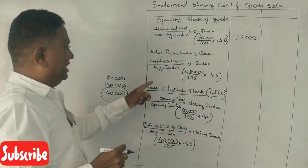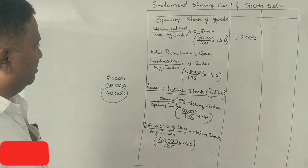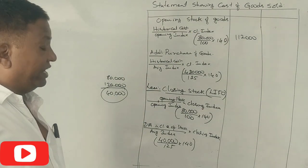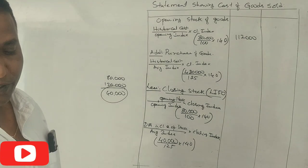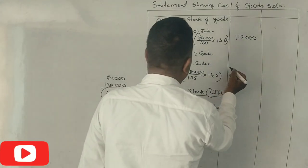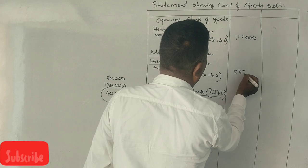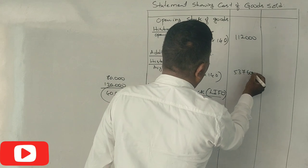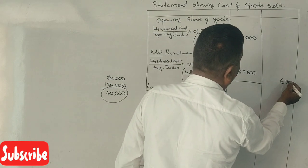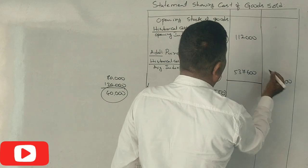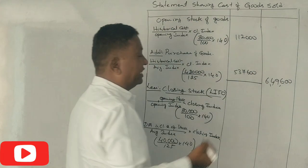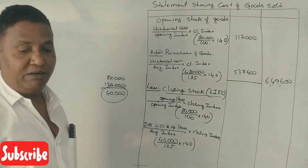Purchase restated: 4,80,000 divided by 125 multiplied by 140 equals 5,37,600. Total goods available for sale: 1,12,000 plus 5,37,600 equals 6,49,600.